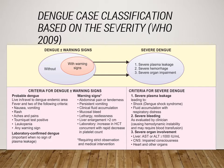Regarding dengue case classification based on severity: the old classification of classical, hemorrhagic, or shock syndrome was used in the past, but in 2009 the WHO changed it to two categories — dengue with or without warning signs, and severe dengue.